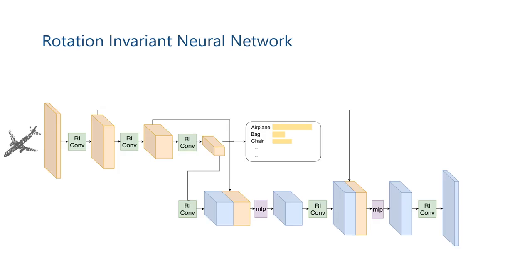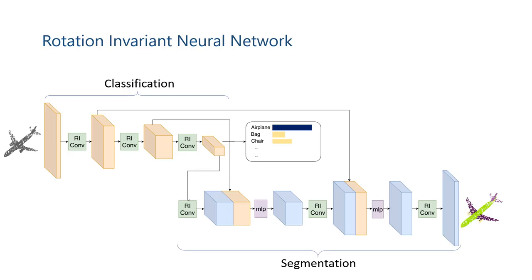Based on the RE-Conv operator, we are able to design the rotation environment network. The classification network consists of three RE-Conv operators followed by a classifier to output the class labels. The segmentation network follows an encoder-decoder architecture with skip connections, similar to U-Net.